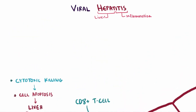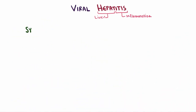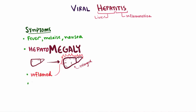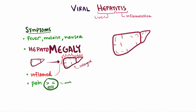As someone's hepatitis progresses, we'll see a couple of classic symptoms related to your immune system mounting an attack, like fever, malaise, and nausea. Additionally, patients might have hepatomegaly, where their liver is abnormally large from inflammation, which might also cause some pain. As more and more damage is done to the liver, the amount of transaminases in their blood will increase.